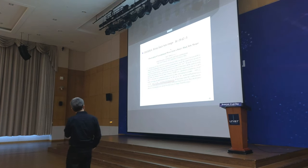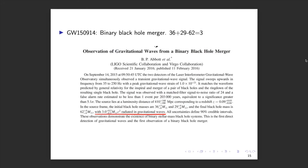Going back to the GW150914 announcement — published in Physical Review with approximately 800 collaborators — when they announced the first observation of gravitational waves on September 14, 2015, the abstract gives these numbers: initial black hole masses of 36 and 29 solar masses, and a final black hole mass of 62 solar masses. The discrepancy: 36 + 29 − 62 = 3 solar masses, which is the amount radiated away in gravitational waves. This is a number every observer would accept because of supertranslation invariance.